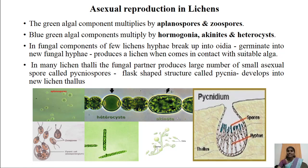In many lichen thalli, the fungal partner also produces a large number of small asexual spores called pycniospores, which form inside a small flask-shaped structure called pycnidium. Pycniospores are produced in chains inside the cup-shaped or flask-shaped pycnidium. They are released into the cavity of the pycnidium and exit through a small opening called the ostiole.